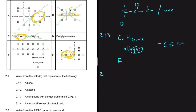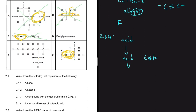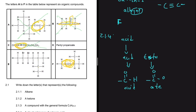For 2.1.4, we're looking for a structural isomer of octanoic acid. For an acid, a structural isomer could be another acid or an ester, since acids and esters are functional isomers. If it's an acid, we look for something ending with 'acid'; if it's an ester, we look for something ending with 'ate'.